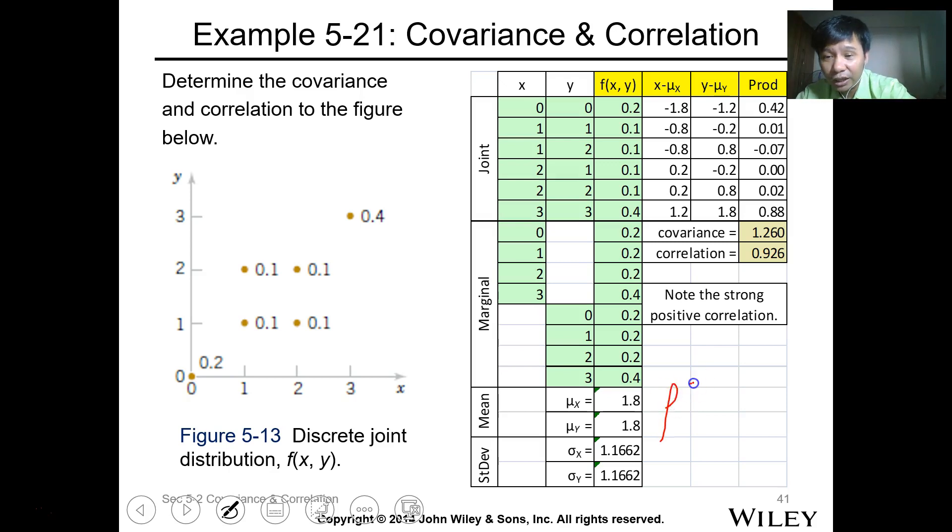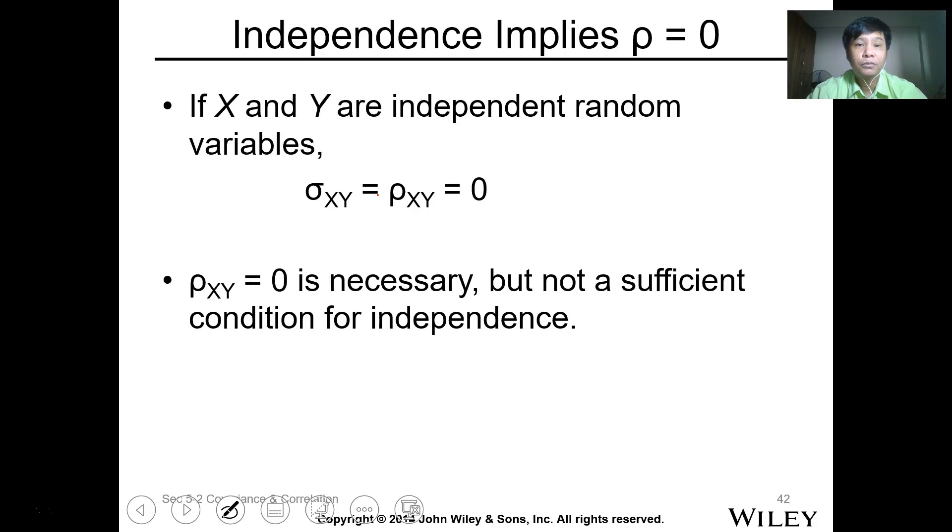For correlation, our rho is just covariance xy over sigma x sigma y. So this is 1.260 divided by sigma x and sigma y. When you get the value, it's 0.926. This value expresses that the correlation of the product is strong, meaning you can have a trend or behavior for this kind of data.